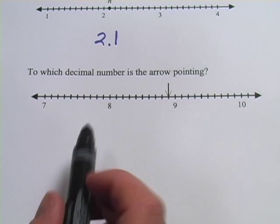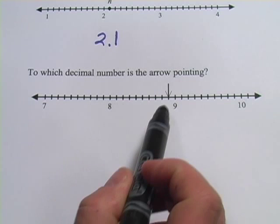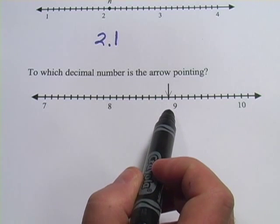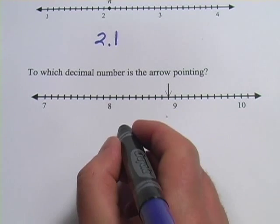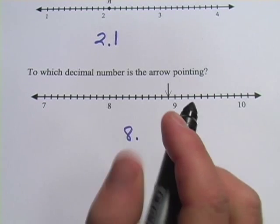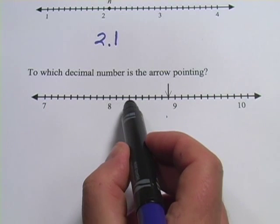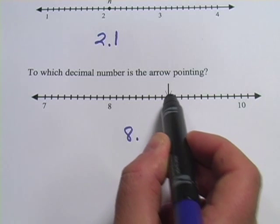Alright, last one. This one says, to which decimal number is the arrow pointing? Well, it's somewhere between 8 and 9, so it's going to be 8 point something, and then we've got to count the hash marks, 1, 2, 3, 4, 5, 6, 7, 8, 9.